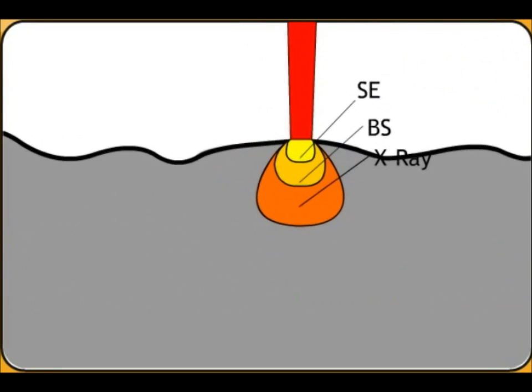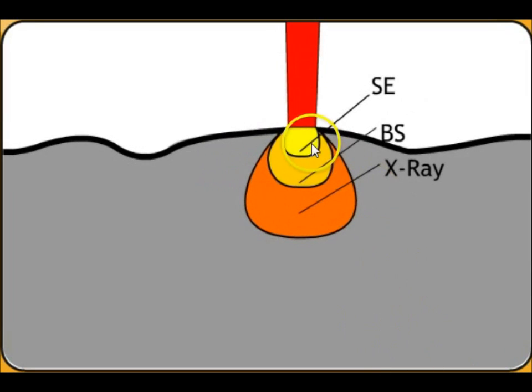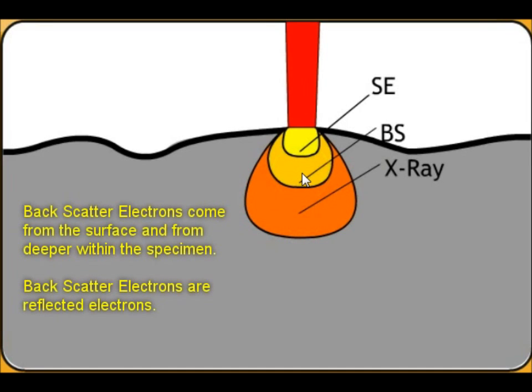So this illustration will actually show you where these electrons are going to come from. So you can see here the secondary electrons are going to be surface electrons. So they're very shallow, but these are very, very good for getting surface features. And of course, that's one of the main reasons for using a scanning electron microscope.